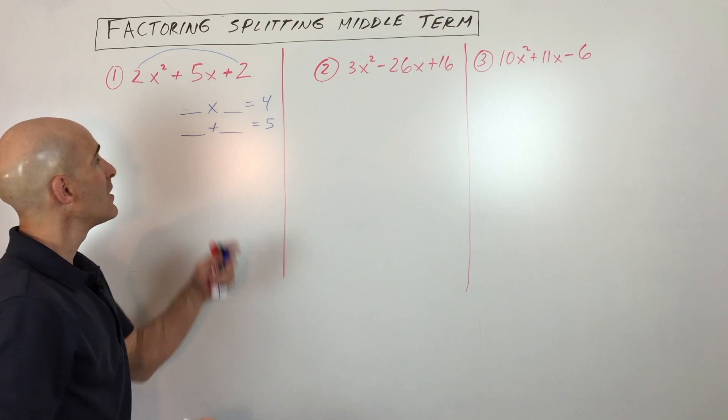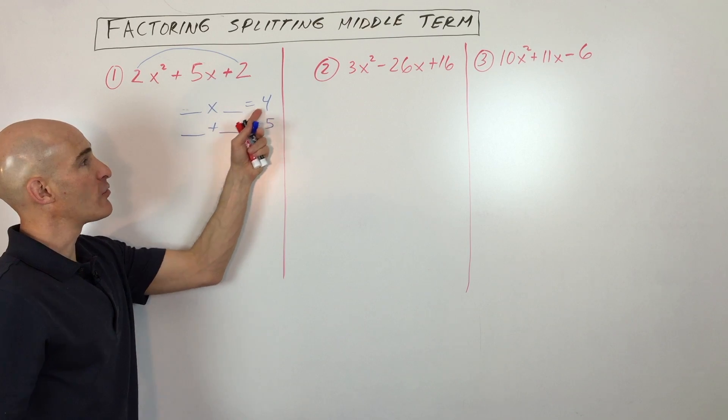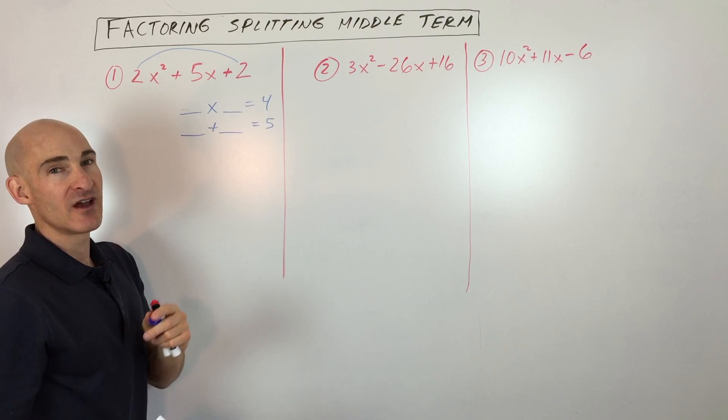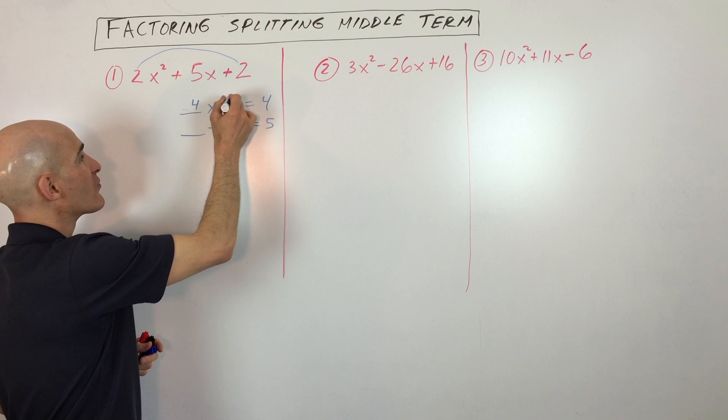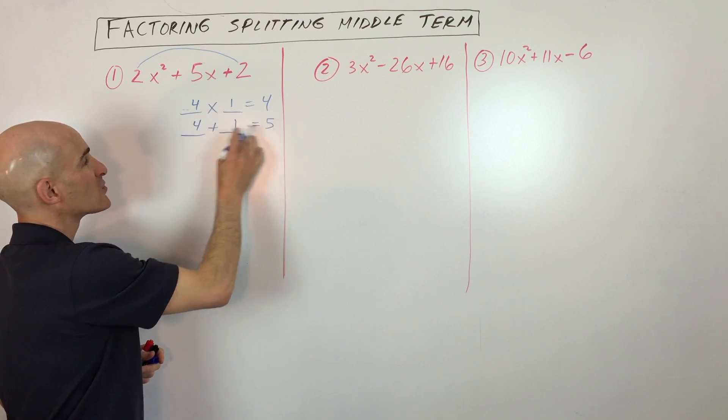Are you with me so far? So what do you think those two numbers are then? Multiply to four but add to five. If you said four and one, you're absolutely right, because four plus one is five, four times one is four.